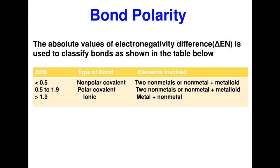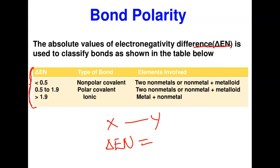Bond polarity is classified based on the absolute difference in electronegativity (ΔEN) between two bonded atoms. If ΔEN is less than 0.5, the bond is non-polar covalent — this usually occurs between two non-metals or a non-metal and a metalloid. If ΔEN is between 0.5 and 1.9, the bond is polar covalent.